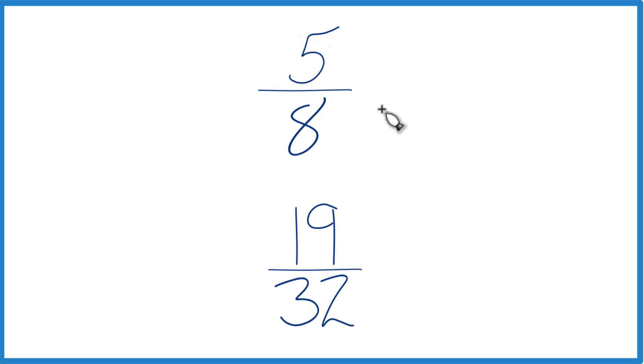So we could just take a calculator, divide 5 by 8, get a decimal, 19 by 32, get a decimal, and compare them. That would work.